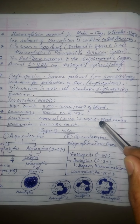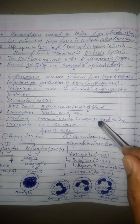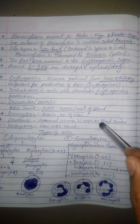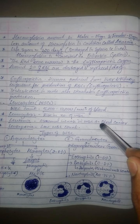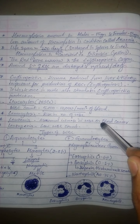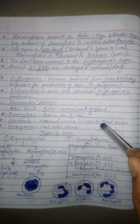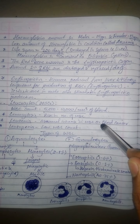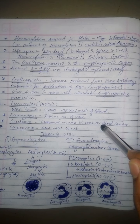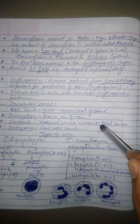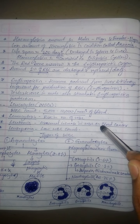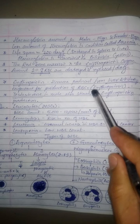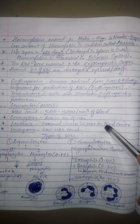RBCs are destroyed in the spleen and liver, so the spleen is also called the graveyard of RBCs. Hemoglobin is then converted to bilirubin in the liver, which is a pigment of bile. The red bone marrow is the erythropoietic organ. Erythropoiesis is the term for the formation or generation of RBCs, and red bone marrow is the organ where RBCs are produced.